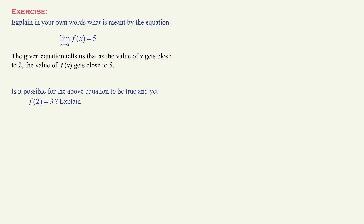As for part b, your answer should be yes or no, followed by an explanation. Is it possible for the limit of the function as x approaches 2 to be 5 and yet f of 2 to be 3? The answer is yes — it is possible that the graph has a hole at 2 comma 5 and the function is defined such that f of 2 is 3. That is what you would write as an answer if this equation is asked on a test.